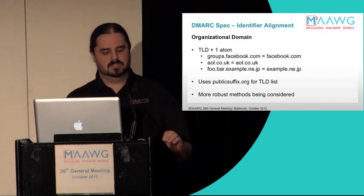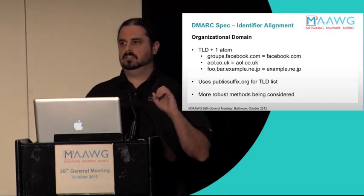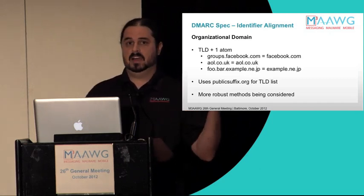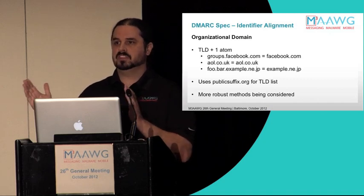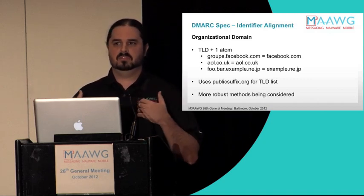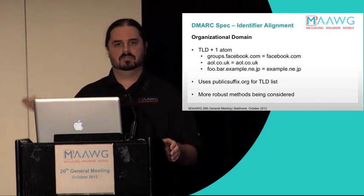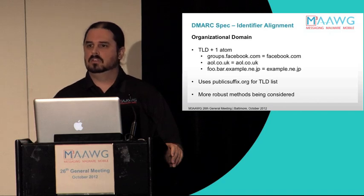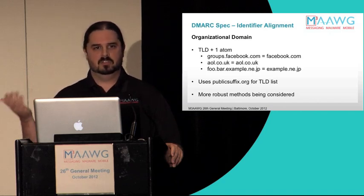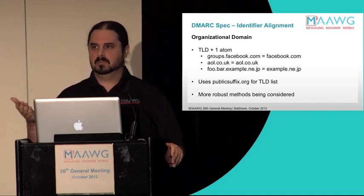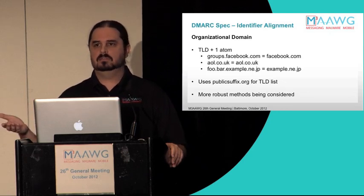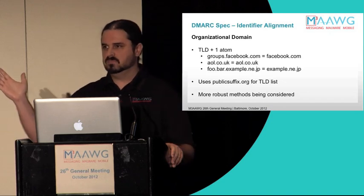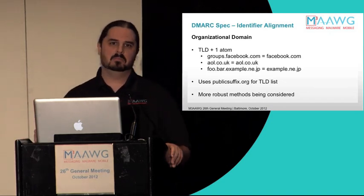What this allows you to do is if you are doing things like bounce-handling subdomains, your MAIL FROM domain can be bounce-dot-whatever-the-domain-you're-sending-as, and with relaxed alignment, SPF will still be considered in alignment with the From domain. So if you're sending as your brand and you've contracted out to a third party, and for bounce management they need to use some subdomains, they can do that and DMARC will still appear aligned, and that mail will still be delivered without DMARC having any negative impact on it.